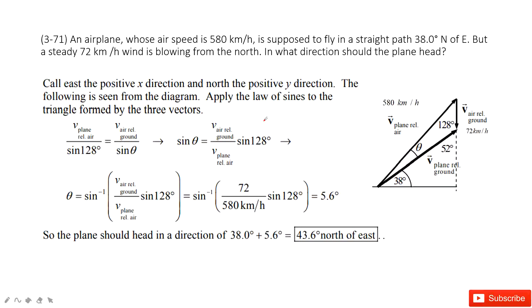This is still the relative velocity problem. First thing we consider is the relative velocity equation. As we learned, it tells us the velocity of the plane to the ground should equal to the velocity of the plane to the air plus the velocity of air to the ground.